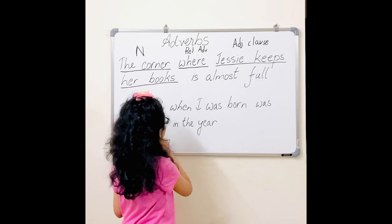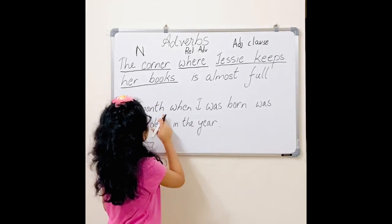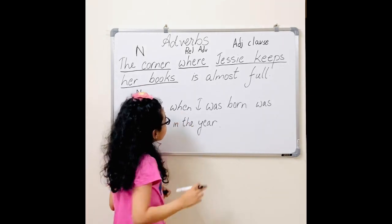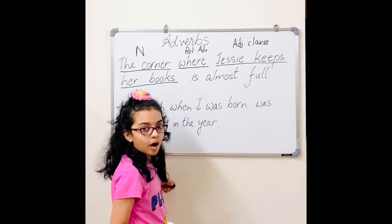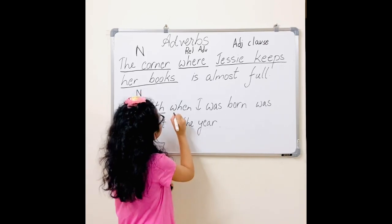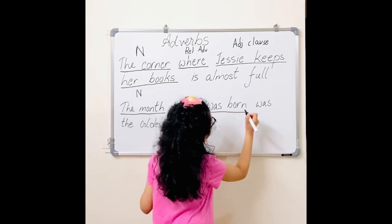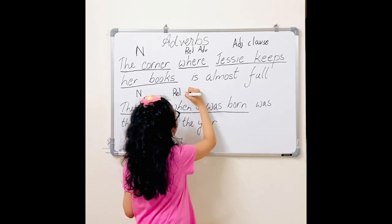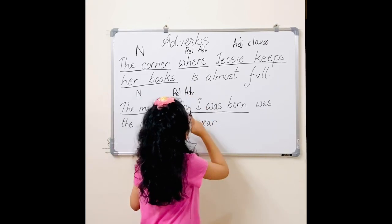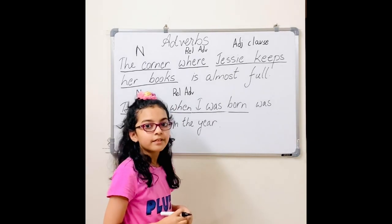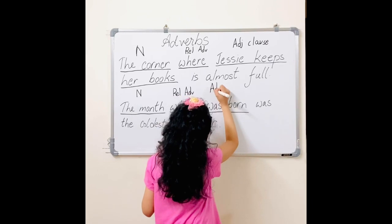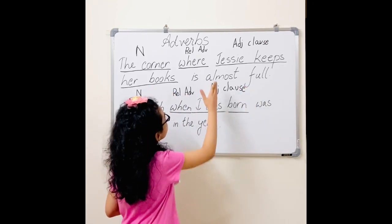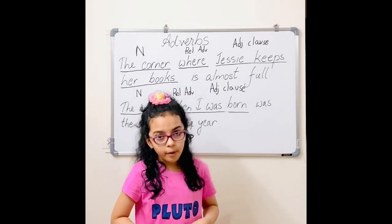The month when I was born was the coldest in the year. The month here is the noun, and when is the relative adverb, which introduces the adjective clause. So when I was born is the adjective clause. So these are my two examples for relative adverbs — have fun being an adverb master!